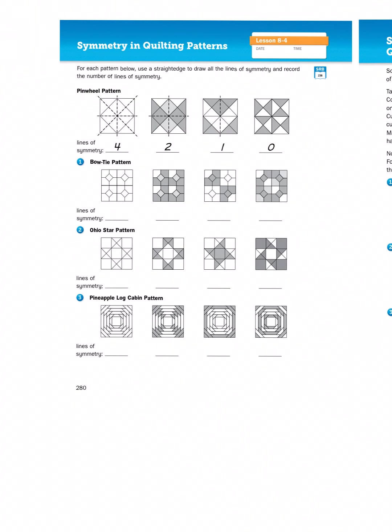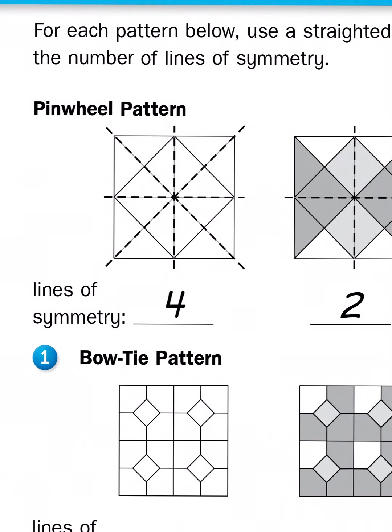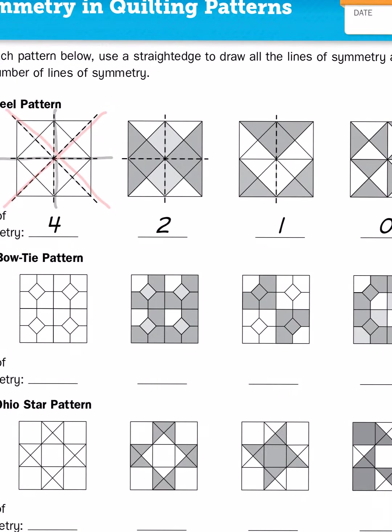Now, if you look at the pinwheel pattern to begin with, when there's no color assigned, there are four lines of symmetry: a vertical line, a horizontal line, and then two diagonal lines, like so.